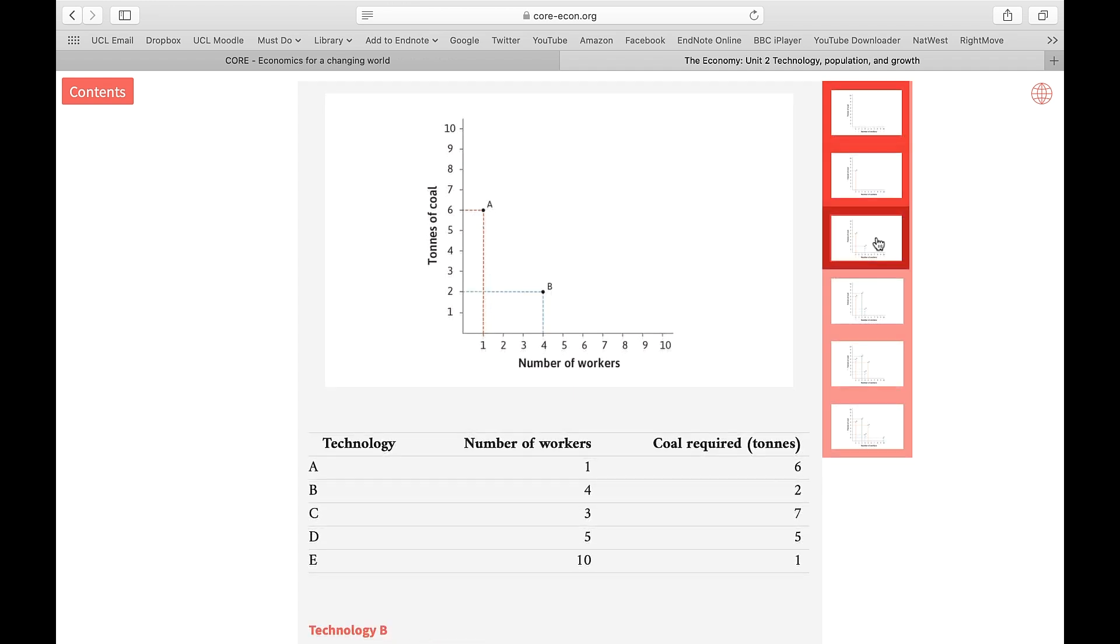Now, technology B produces the same amount of cloth, 100 meters, but it uses less energy and more number of people compared to A. Let's see a real-world example of technology B.